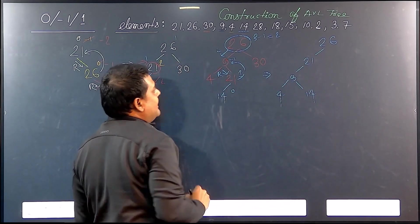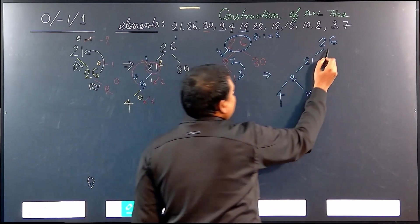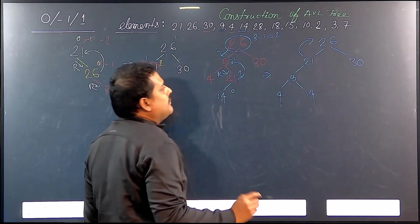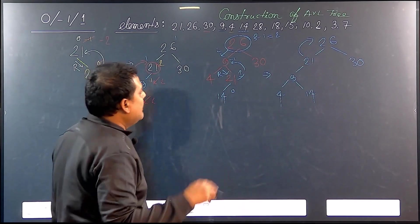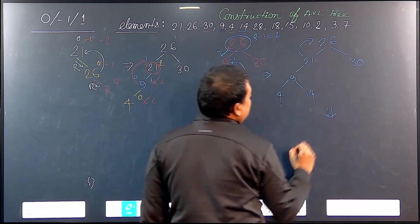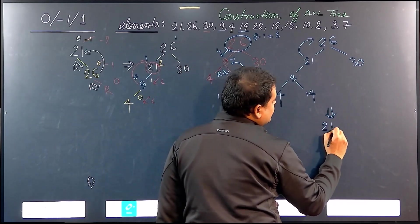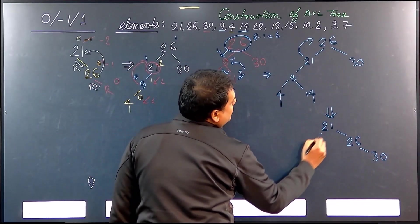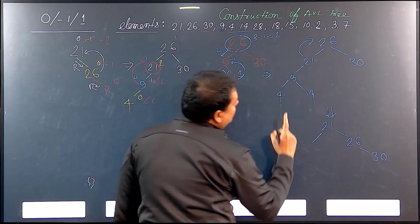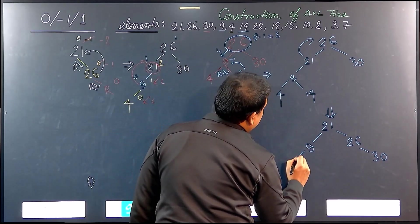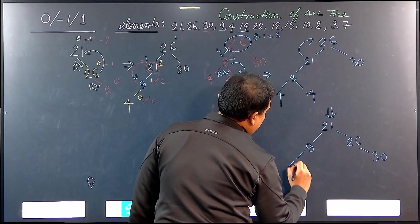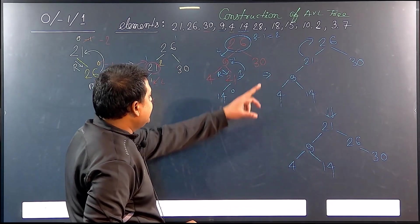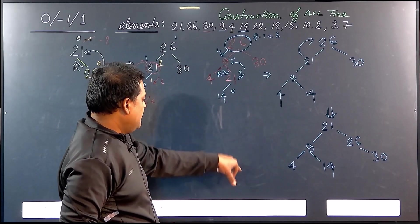This is a left-right imbalance, so another rotation is required. The problem is arising at 26. We will rotate: 21 will come up, 26 will go down. After rotating, 21 is at the top, 26 is on the right, and 30 is on the right of 26. On the left side, 9 is here, 4 is here, and 14 is here. Let me check — all elements are there: 26, 30, 21, 9, 4, 14. Everything is fine.